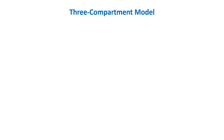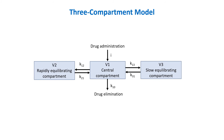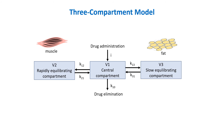The three compartment model includes another peripheral compartment in addition to the two compartments we have discussed. The first peripheral compartment represents the highly perfused tissues like muscles, and the second peripheral compartment represents the scarcely perfused tissues like fat. These two compartments are also called rapidly equilibrating and slowly equilibrating compartments. The drug elimination, distribution, and redistribution follows the same logic we discussed in the one and two compartment models.